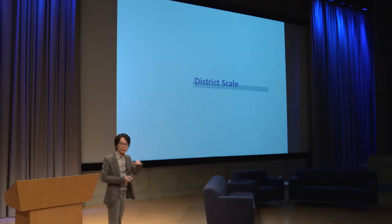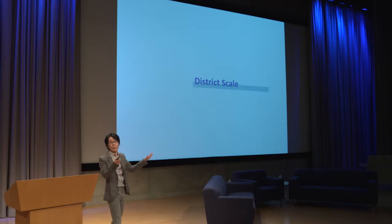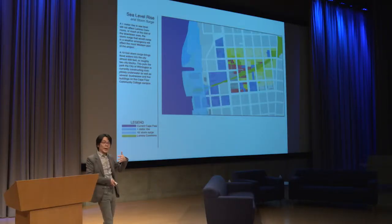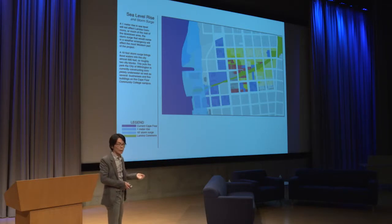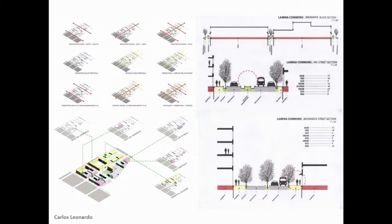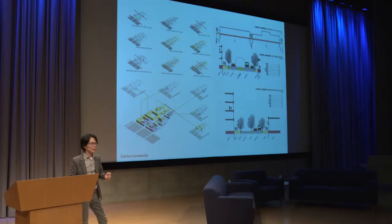Finally, we zoomed into the district and site level scale — perhaps the students' favorite scale, because they are architecture students who want to do design. Again, we asked them to use GIS to look at the impact of rising sea level and examine all the different physical and environmental layers. Finally, they were able to look at the details of physical structures of different typical urban design elements.